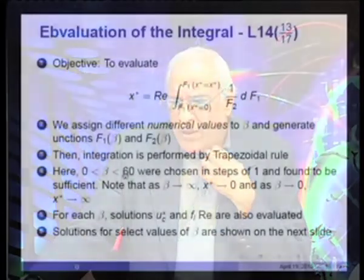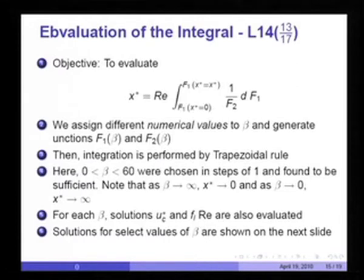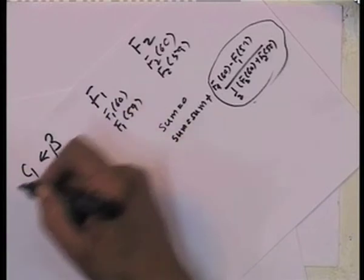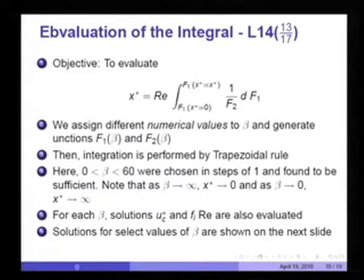Once β values are chosen, three more quantities can be calculated for each: C₁, u*_c (centerline velocity), and F_L (local friction factor). These are all functions of β, and once the integration relates the value of x* to β, we know the values corresponding to each x*. Although a large number of solutions were generated for very tiny steps of β, results for select values of β are shown.